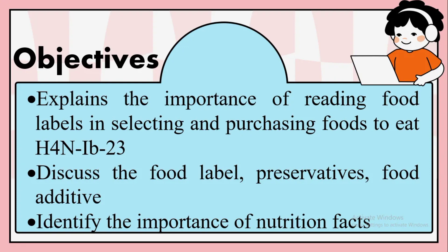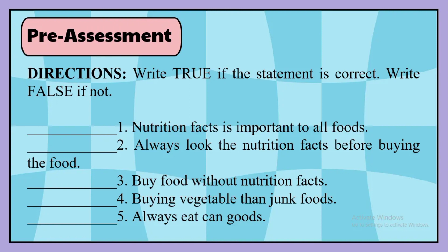Directions: Write true if the statement is correct, write false if not. Blank one: Nutrition facts is important to all foods. Blank two: Always look at the nutrition facts before buying the food. Blank three: Buy food without nutrition facts. Blank four: Buying vegetables rather than junk foods. Blank five: Always eat canned goods.